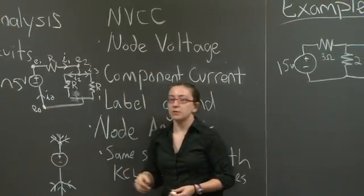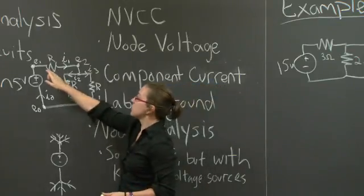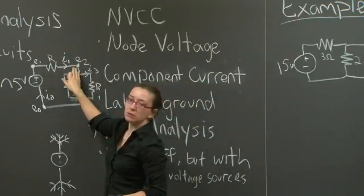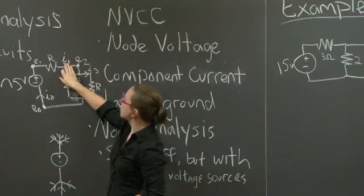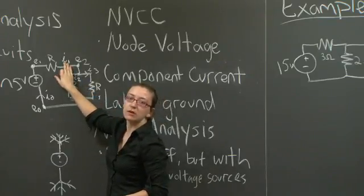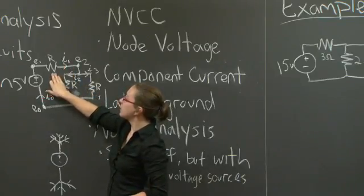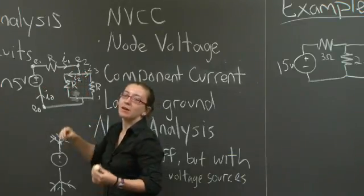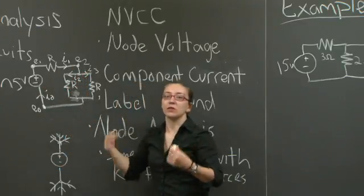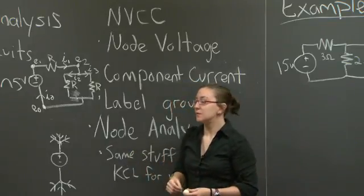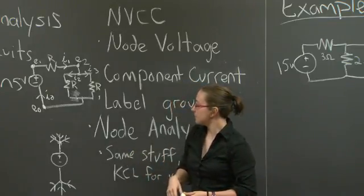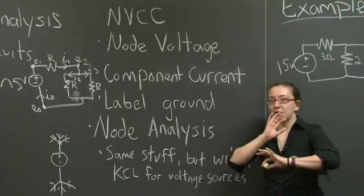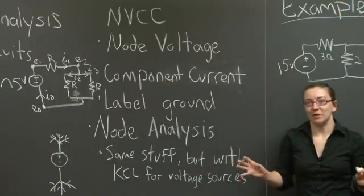At that point, I'm going to write out the relationships between the voltage drop across particular components, the current flowing through that particular component, and whatever relationship the component requires the voltage and the current to have to one another. That's a whirlwind review of NVCC method.